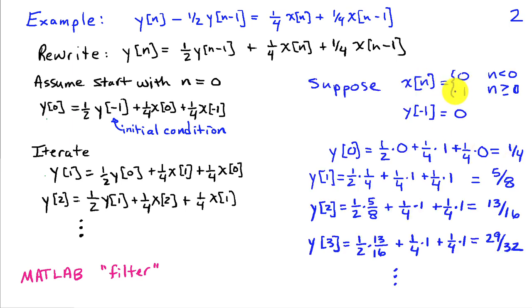Suppose we have an input x[n] which is 0 prior to time 0, and then it's 1 for n greater than or equal to 0. We'll assume that initially our initial condition y[-1] is 0. Zero initial conditions correspond to a system that is at rest, that has no stored energy in it. If we had a non-zero initial condition, that would be leftover energy from some previous action. We start with the system at rest and assume we have this input which changes from 0 to 1 at time 0.